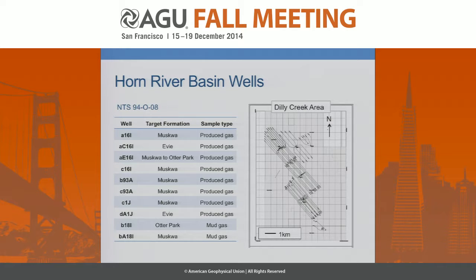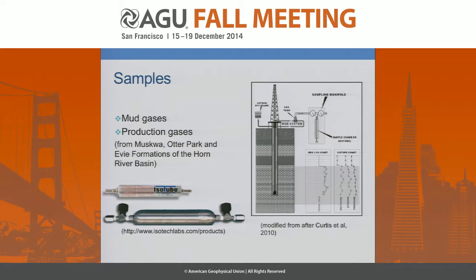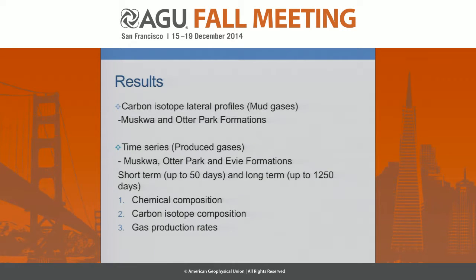We're going to be talking about production gases and something called mud gases. For those of you who aren't familiar with it, there is a technology available to actually collect natural gas while you're drilling. You can identify what depth the gas came from and analyze it for various isotope ratios. Then, after you've done the fracking, you can collect samples from the production. This lays out the different profiles we'll discuss, so let's just dig into it.